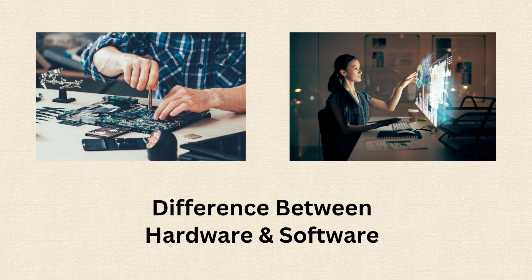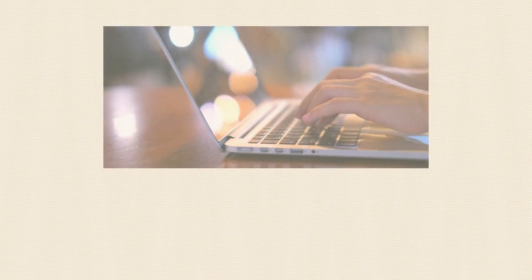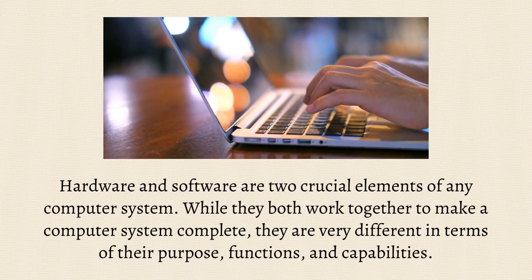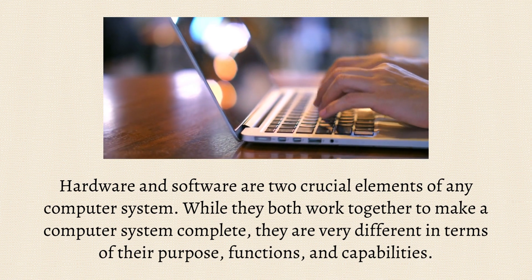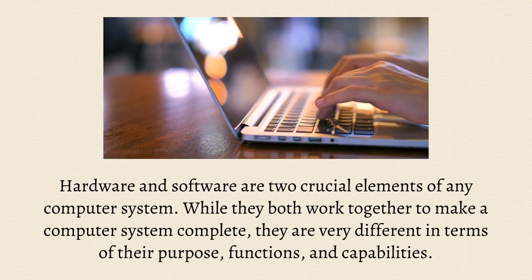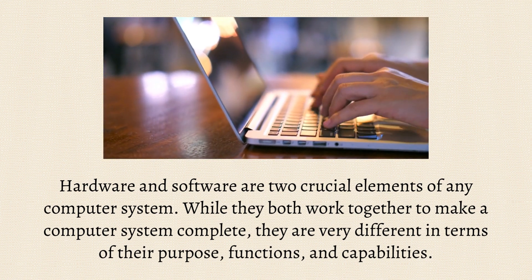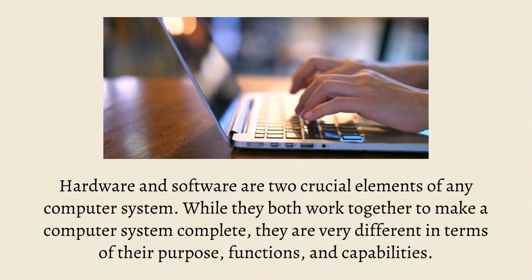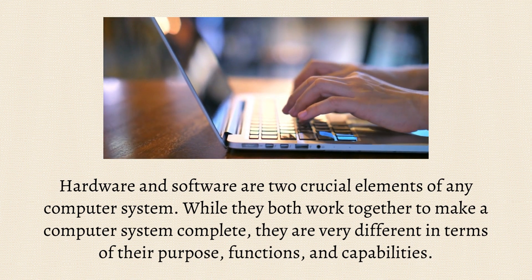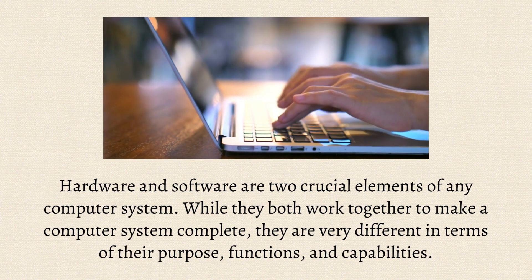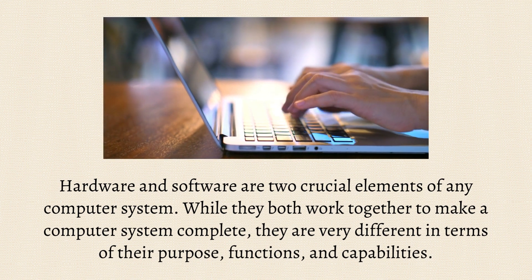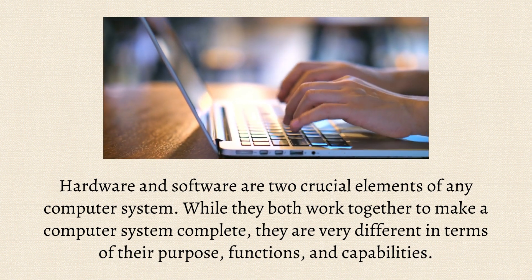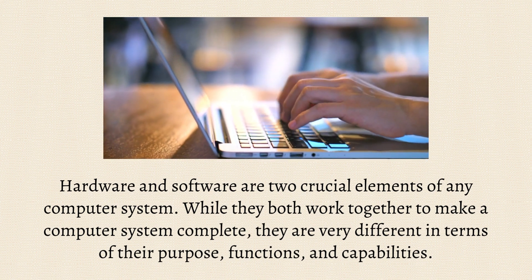Difference between hardware and software. Hardware and software are two crucial elements of any computer system. While they both work together to make a computer system complete, they are very different in terms of their purpose, functions, and capabilities.